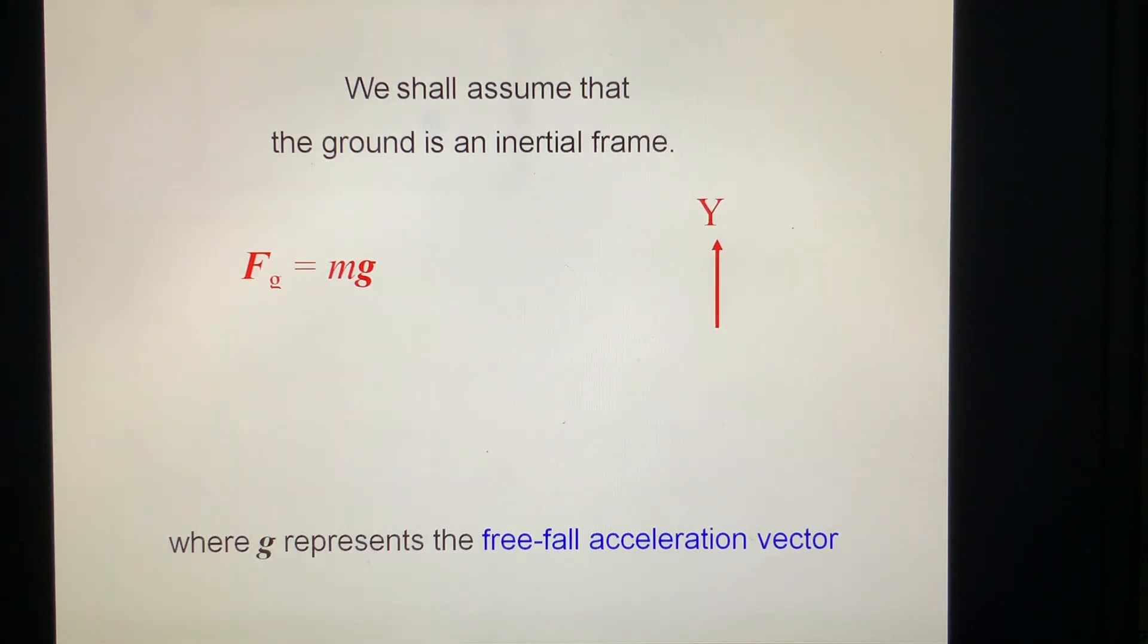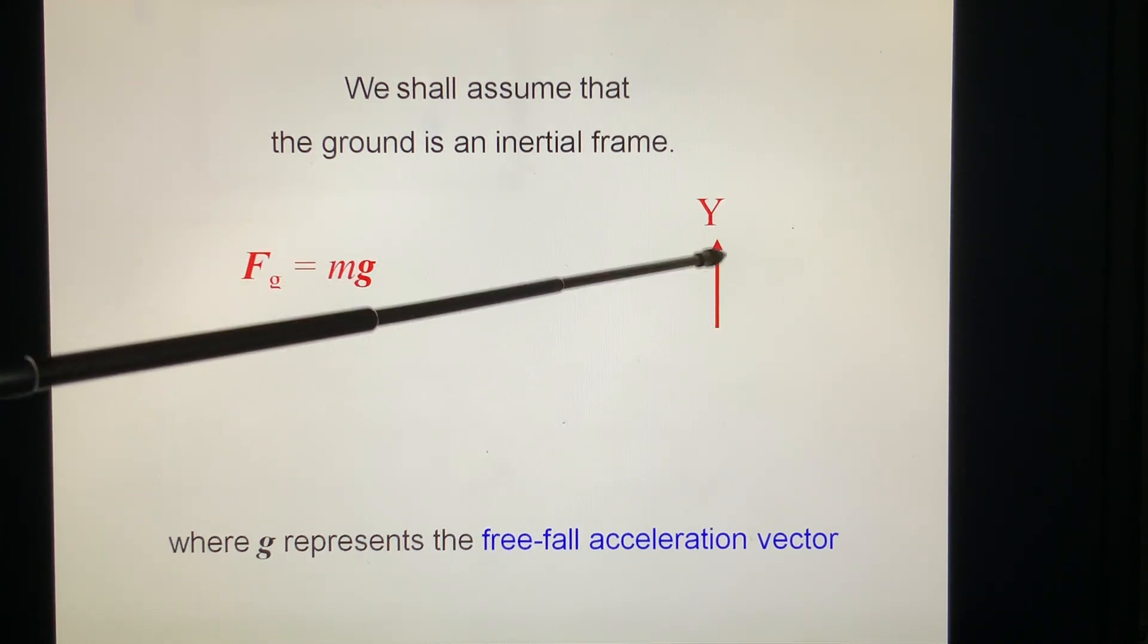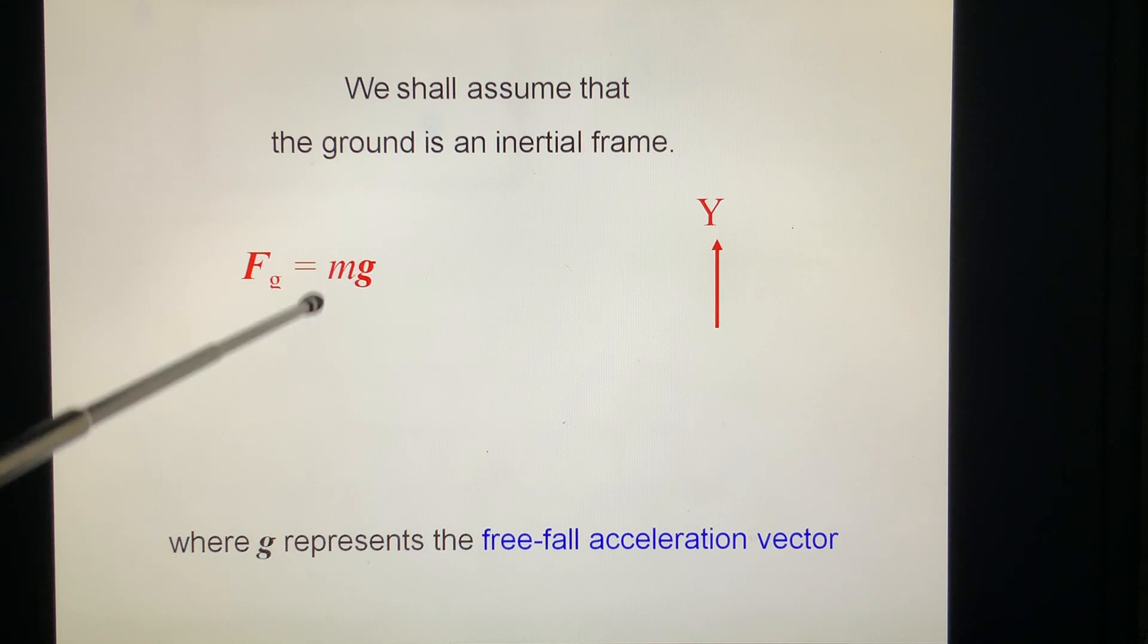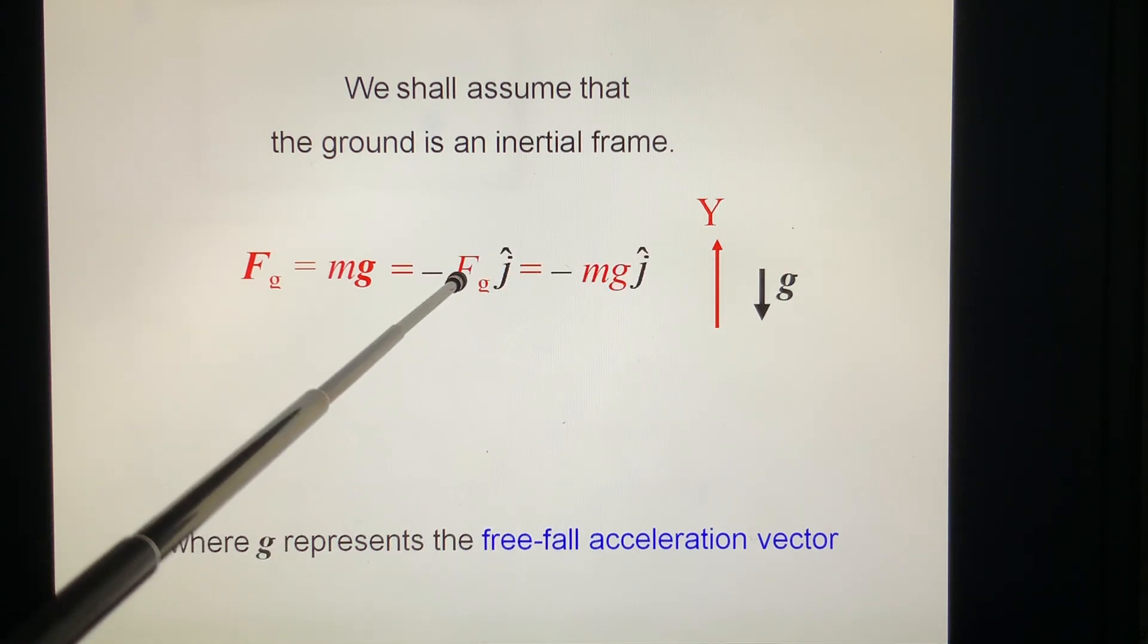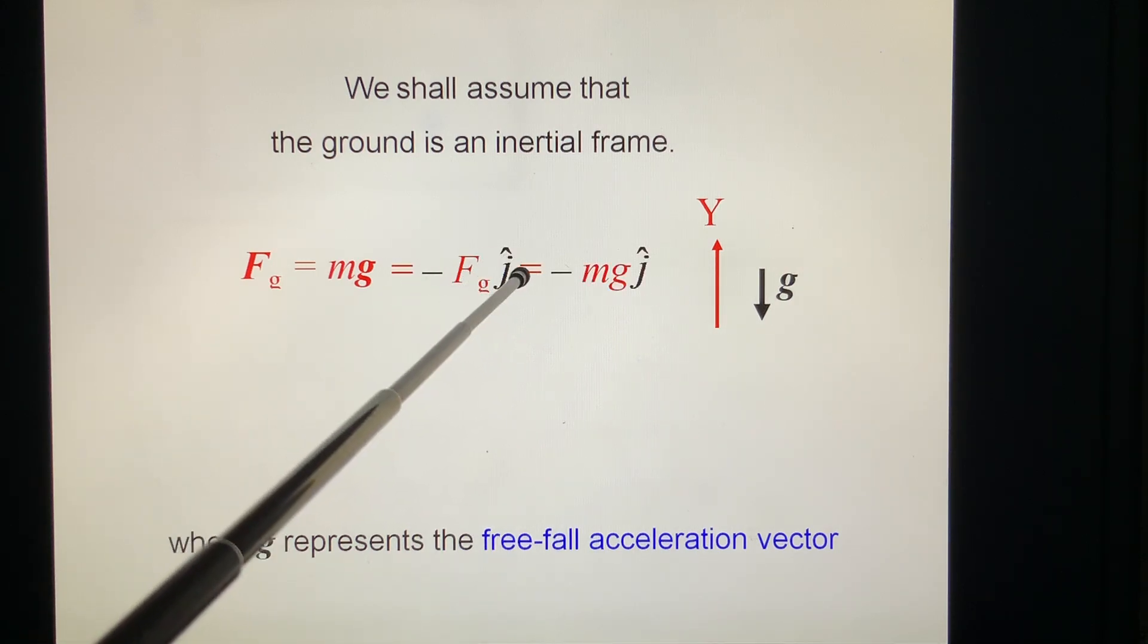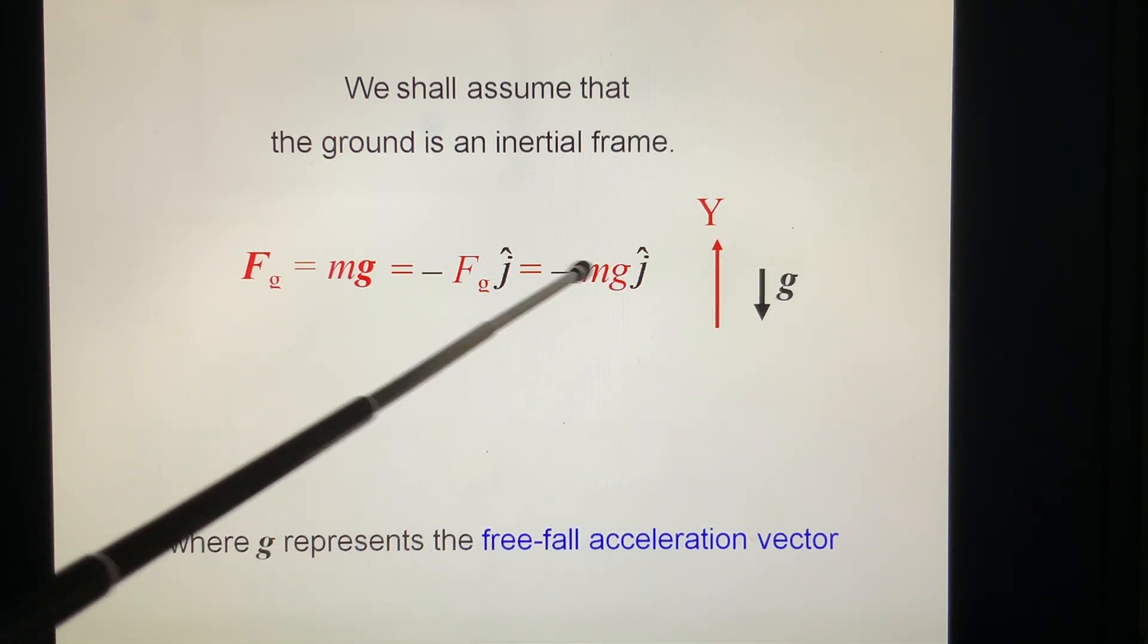Now if we take, you have the choice. Take the y direction positive as upward, and g is always downward. So in this case, we write the equation, rewrite it, minus j, Fg equals mg equals minus Fg j equals minus mg j. We have direction here, minus g, because it goes down. This Fg is mg, minus mg.